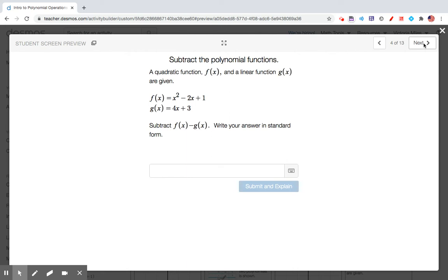In this one, you're going to be subtracting polynomial functions. You're going to subtract f of x minus g of x. Well, there's only one quadratic term. And here, negative 2x minus 4x is negative 6x. 1 minus 3 is negative 2.